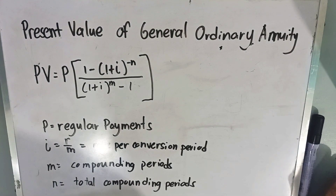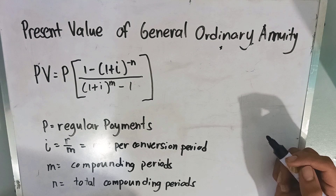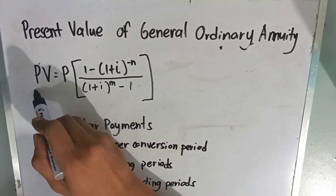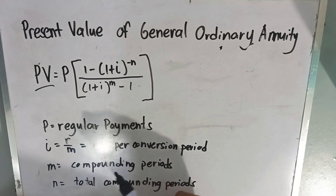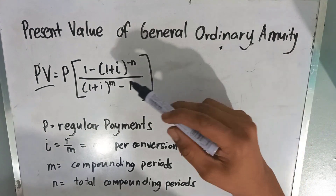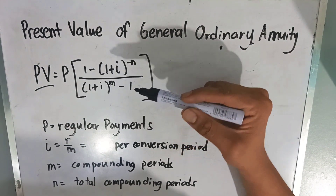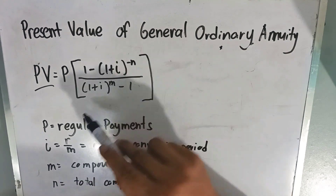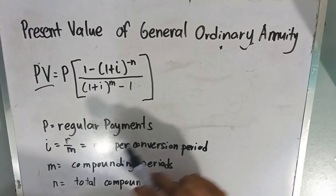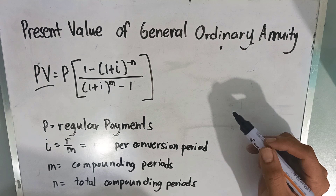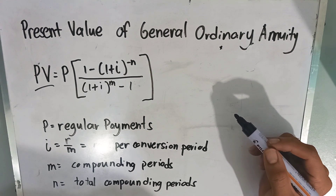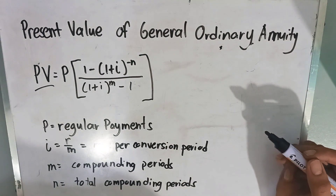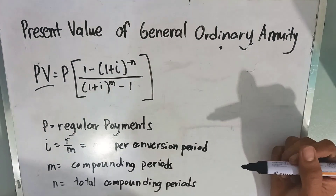Good day everyone. Today we're going to learn the present value of a general ordinary annuity. The formula we're going to use is: present value equals P times 1 minus (1 plus I) raised to negative N, over (1 plus I) raised to M minus 1. P stands for the regular payments or principal amount, I stands for R over M (rate over compounding periods), and M stands for the number of compounding periods.